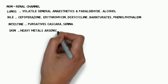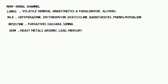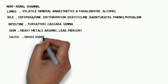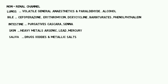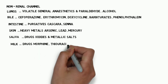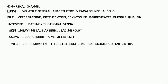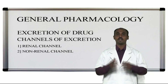Via skin, heavy metals such as arsenic, lead, and mercury are excreted through the skin via perspiration. Via saliva, drugs such as iodides and their metallic salts are excreted through the saliva. Via milk, drugs such as morphine, thiouracil compounds, sulfonamides, and certain antibiotics are excreted through breast milk.